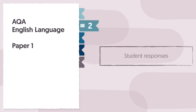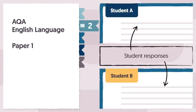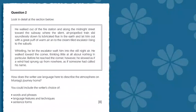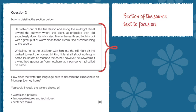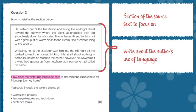In this video, we're going to look at how best to tackle AQA English Language Paper 1, Question 2. We're going to do this by looking at a couple of student responses to a sample question, so remember you can pause the video at any point if you need more time to read what's on screen. First, let's remind ourselves of how Question 2 will look in your exam booklet. You'll be given a section of the source text to focus on, and asked to write about the author's use of language.